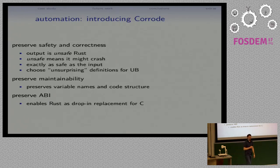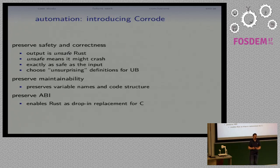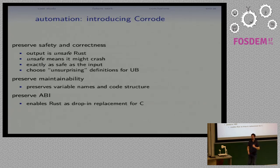Another important point regarding safety and correctness: people always ask me what do you do about undefined behavior in the C source that you're translating? The answer is that I try to, whenever I reasonably can, pick an unsurprising definition for undefined behavior. Given that Corrode is acting as the C compiler, undefined behavior in C means the compiler gets to do whatever it wants, so I try to pick what I'm doing as something that will be least surprising to the programmer.